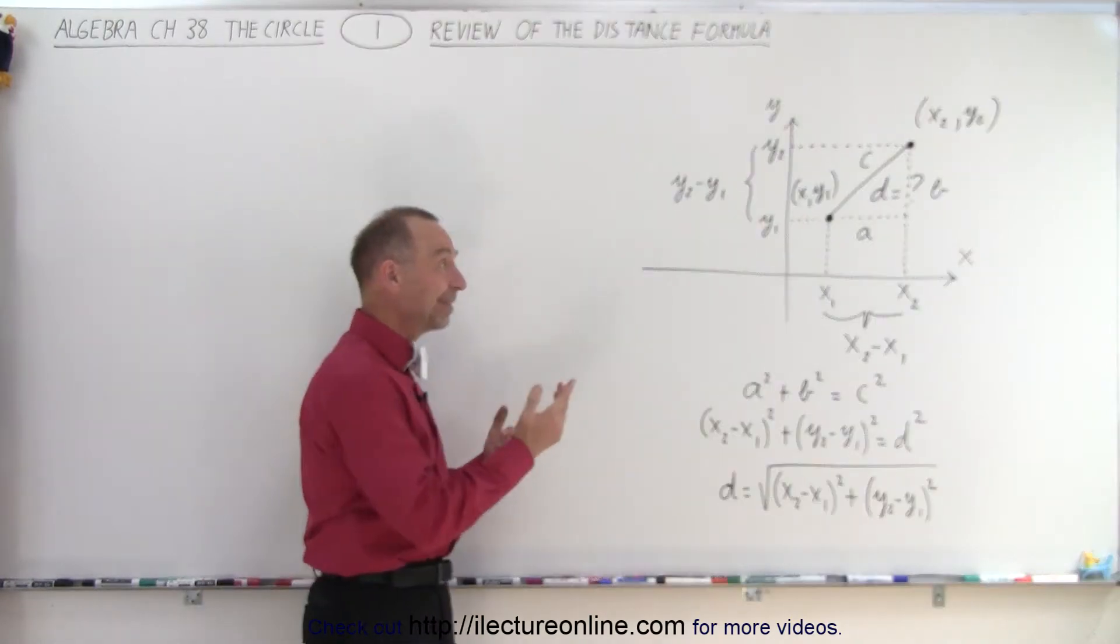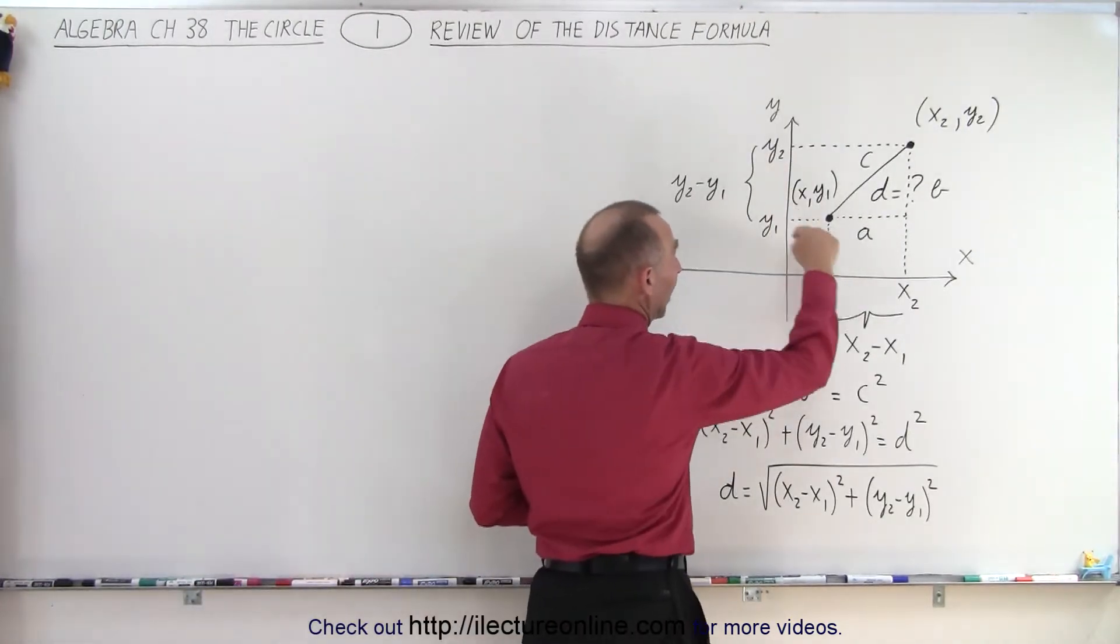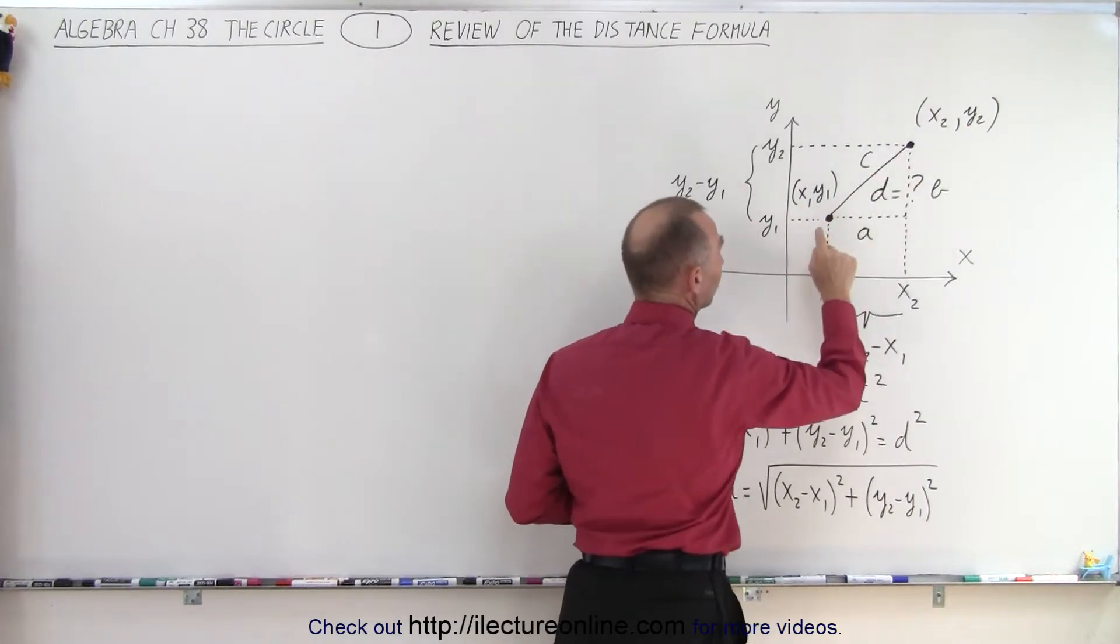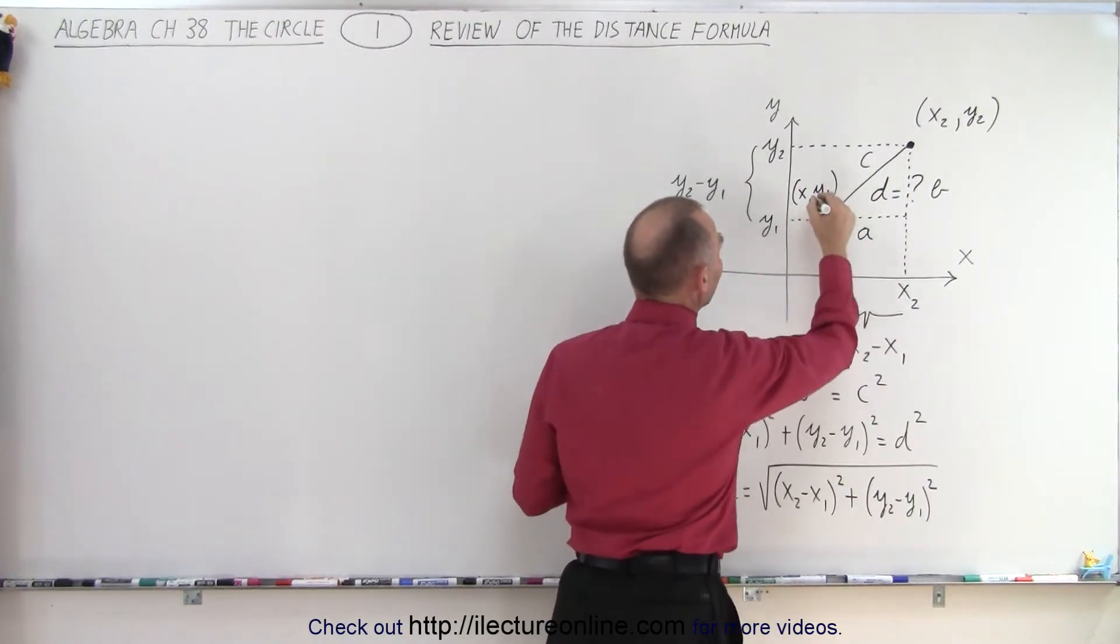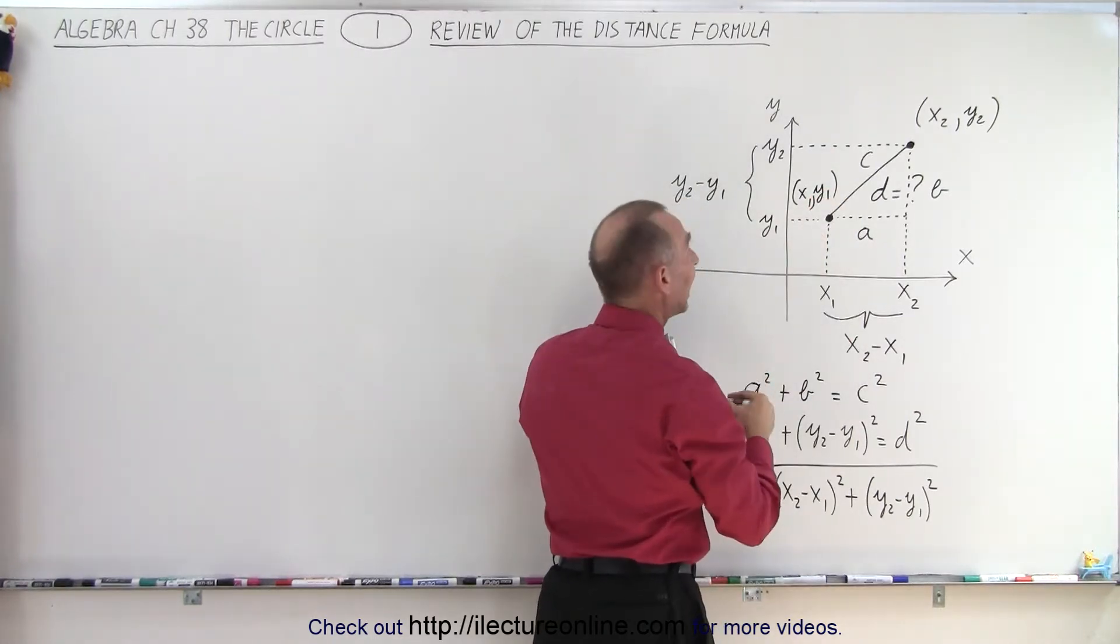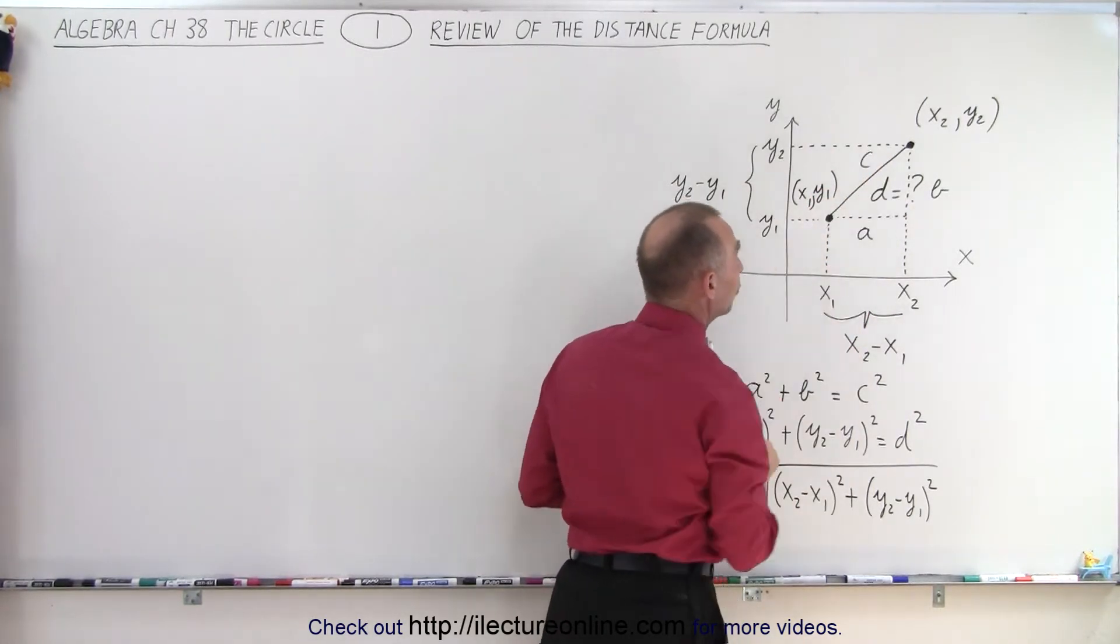So here it is. Let's take two points on the XY plane. Here's point number one. There's point number two. Point number one has the coordinates X1, Y1. And yes, I do need a comma there. And then point number two has coordinates X2 and Y2.